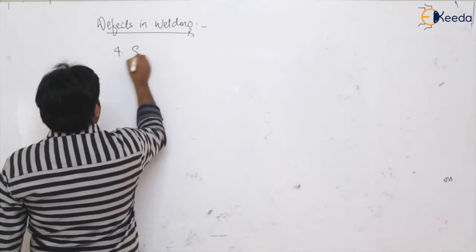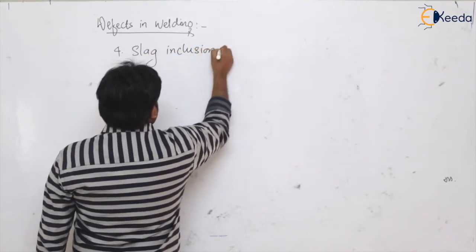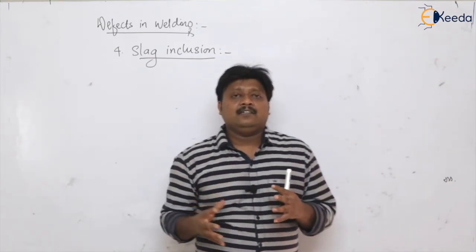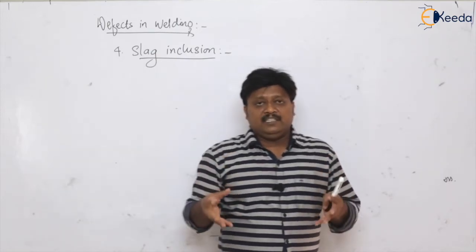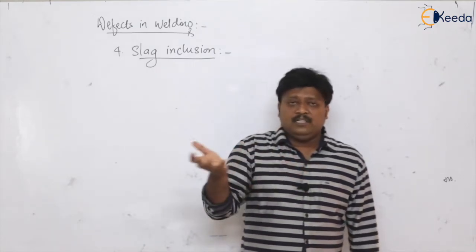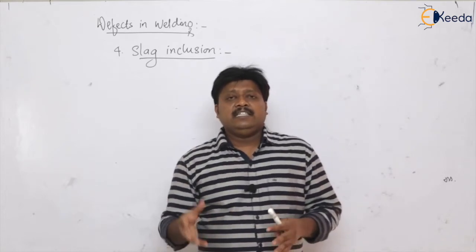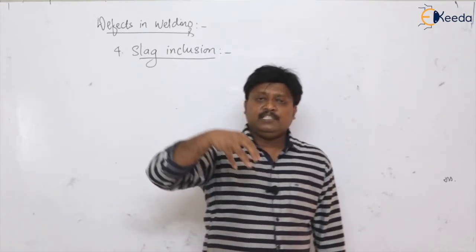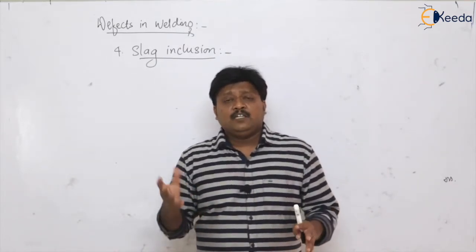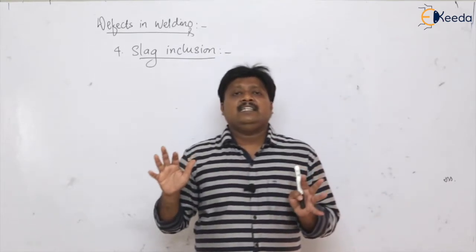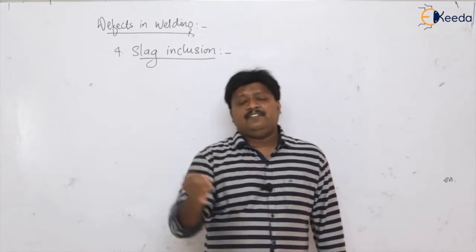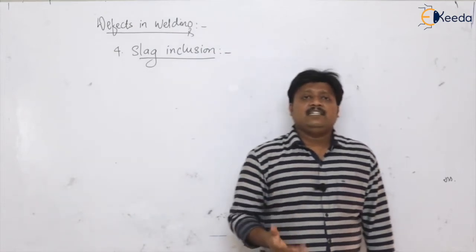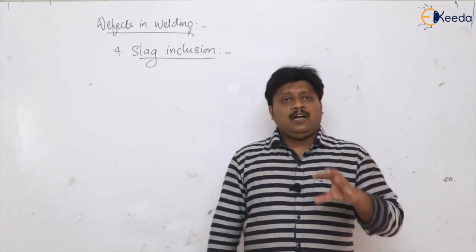The next defect is slag inclusion. Fluxes in the weld combine with impurities in the material present in the weld pool and float on top. However, when using a high intensity arc, the force of the arc pushes the flux into the weld pool. If there is insufficient time for the flux to float out before solidification occurs, the slag gets entrapped — this is slag inclusion.